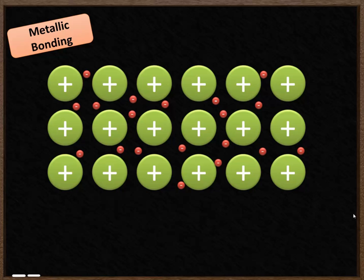We're going to start off by thinking about metallic bonding. This is the kind of chemical bonding that you get in metals. So for example this could be a piece of copper.